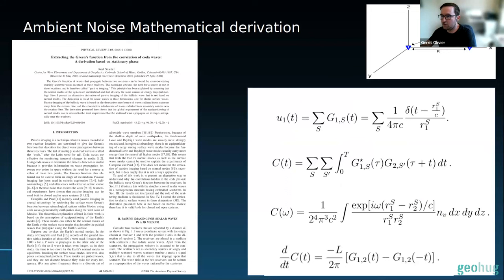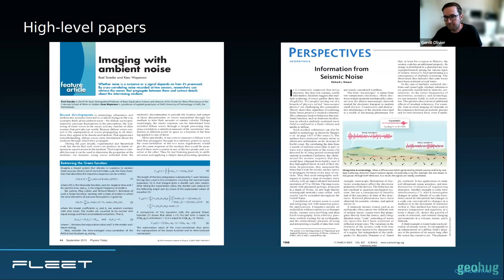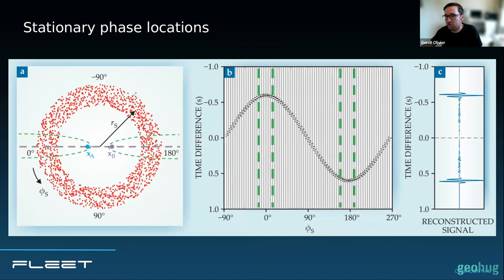There's a mathematical derivation based on the stationary phase approximation — if you write out what the correlation looks like from a bunch of sources, only the ones in line with the receivers contribute. The basic concept is: with two receivers A and B and noise coming from all directions, only the noise sources at the stationary phase locations contribute to the stack. Everything else destructively interferes, and only the in-line sources constructively interfere, as shown in the figure.